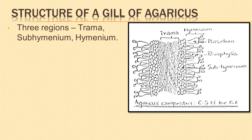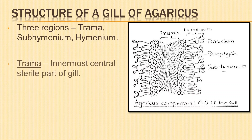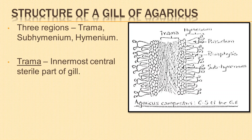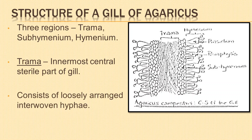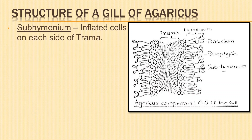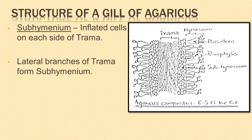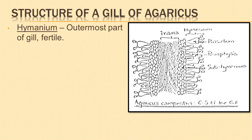A transverse section of the gill shows the following regions: trama, subhymenium or hypothecium, and hymenium or thecium. The trama is the innermost central sterile part of the gill, present between the two hymenial surfaces. It consists of loosely arranged, irregularly interwoven hyphae. The subhymenium or hypothecium contains tissue of small inflated cells on each side of the trama. Hyphae of the trama give out lateral branches which form the subhymenium — this is also a sterile zone.